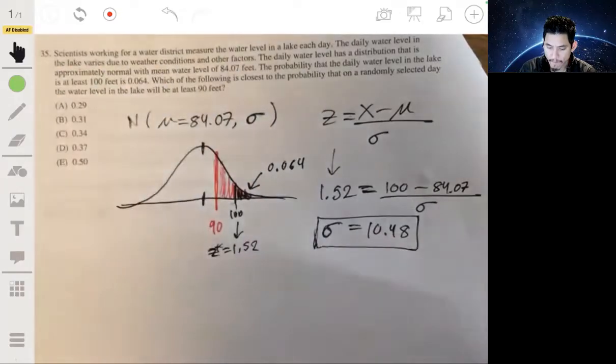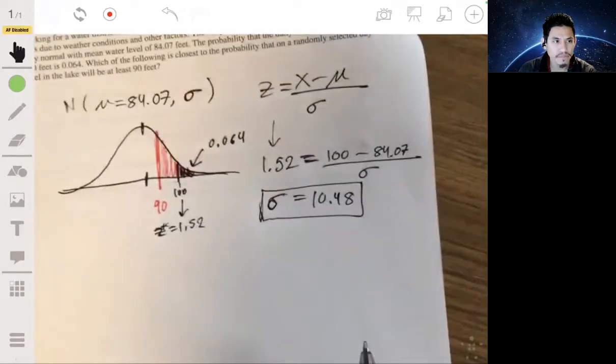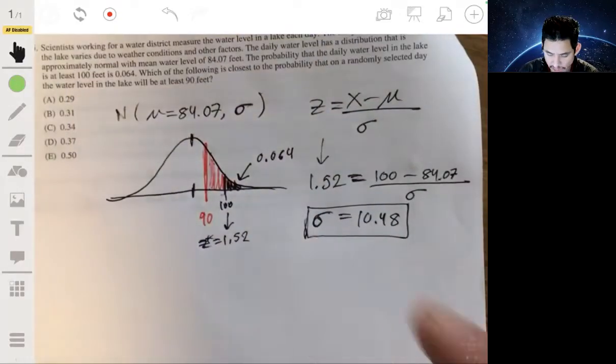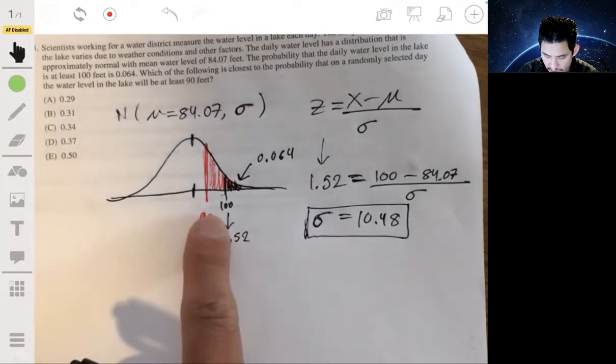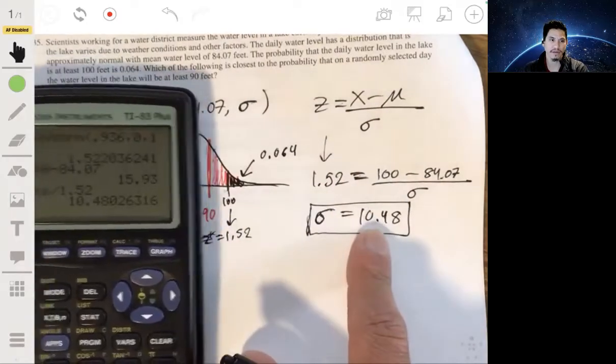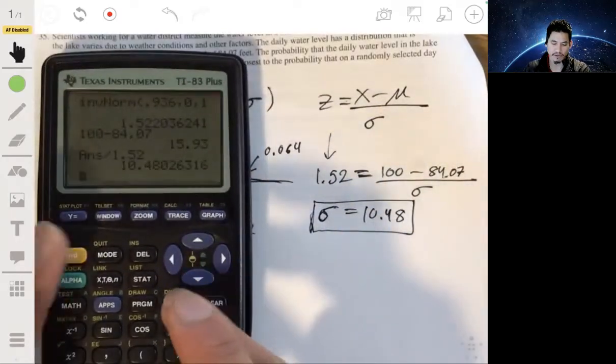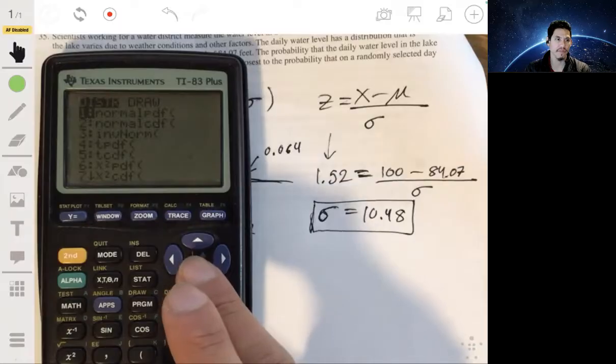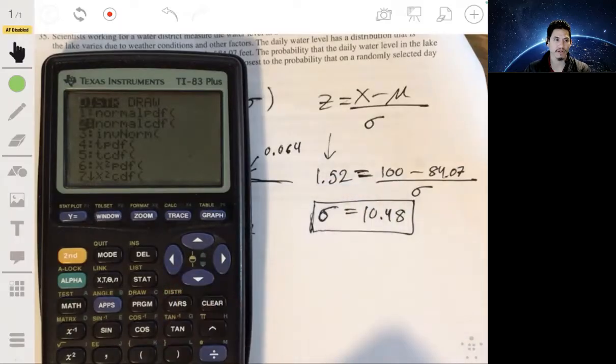Okay. So now we just have to find the area to the right of 90 in a normal distribution with mean 84.07 and standard deviation 10.48. And for this, let's go ahead and use the distribution function. Go to normal CDF in our calculator.